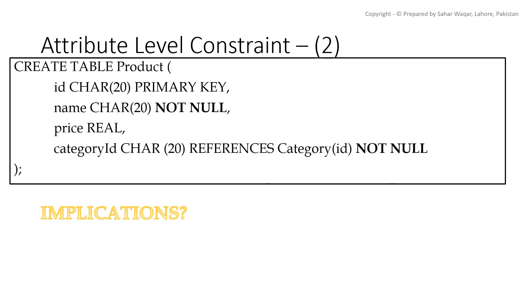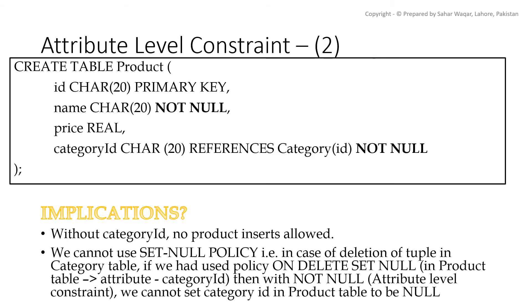The first issue is that we will not be able to insert any new tuple without specifying its category — we cannot leave null in the value of category_id. The second issue is a consequence of the first: we cannot use the SET NULL policy, that is, adding null as the value of category_id when the corresponding category in the category table is deleted or updated. If you have difficulty understanding the ON DELETE SET NULL policy or how foreign keys work, you can look into the foreign key constraints lecture in the same series.